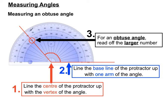So we'll pick one of the two numbers that fits with that, and 130 fits nicely. So our answer to that question, measuring that obtuse angle, is 130 degrees.